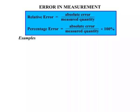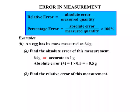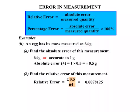An egg has its mass measured as 64 grams. We need to find the absolute error: 64 grams is accurate to 1 gram, so the absolute error is 1 times 0.5, giving plus or minus 0.5 grams. For the relative error, we divide the absolute error by the measured quantity: 0.5 grams over 64 grams, written as a fraction, giving a small decimal — don't forget the plus and minus.